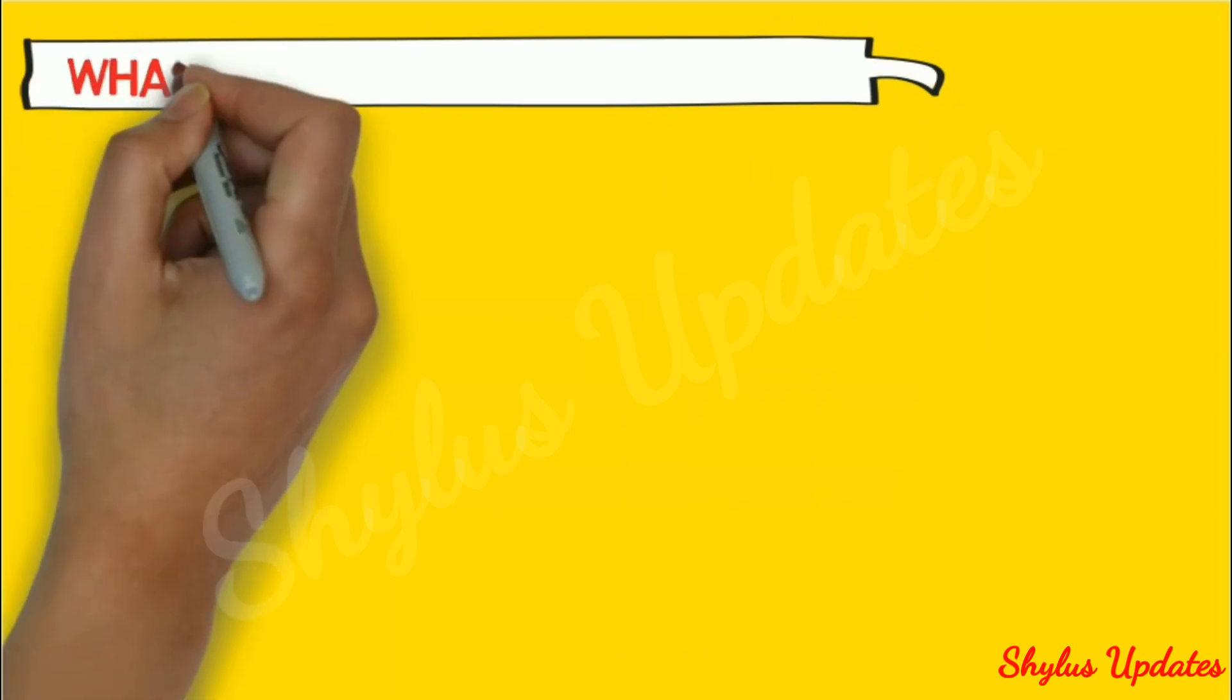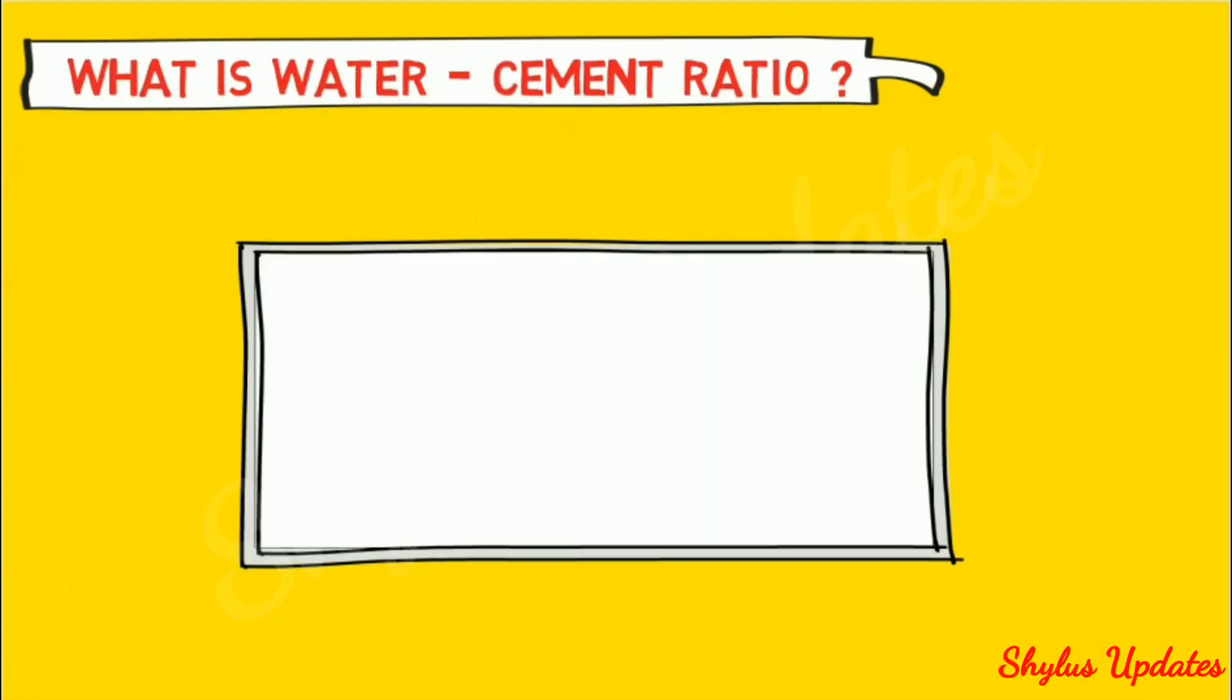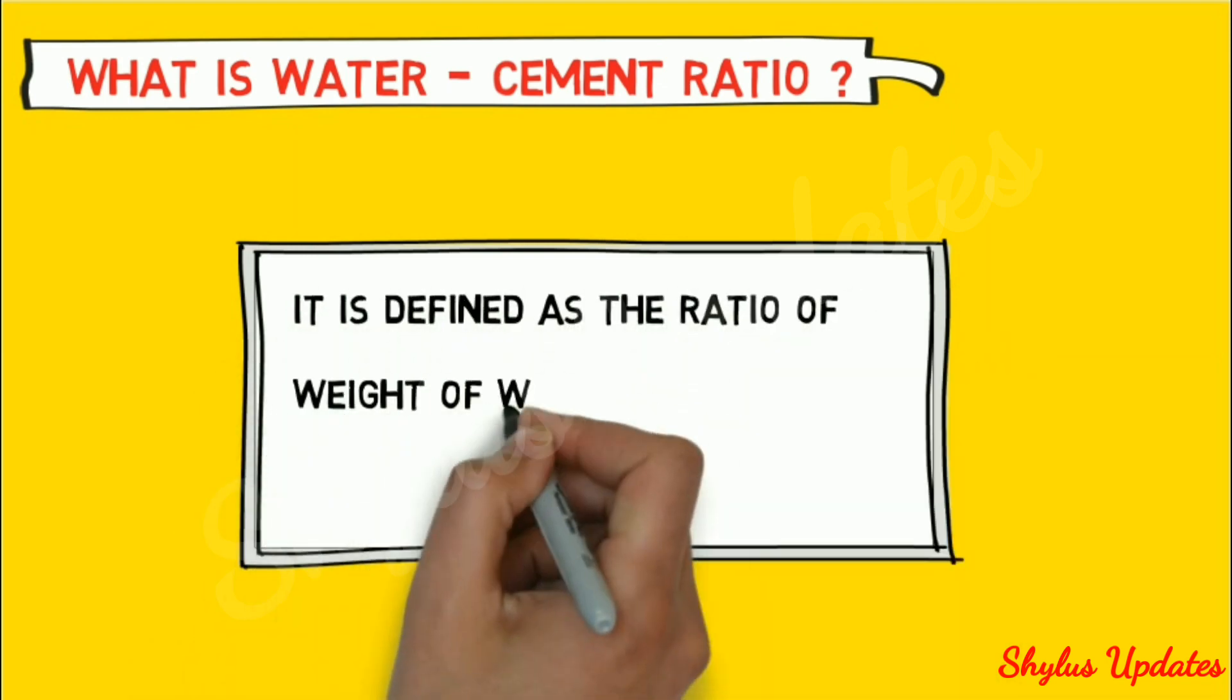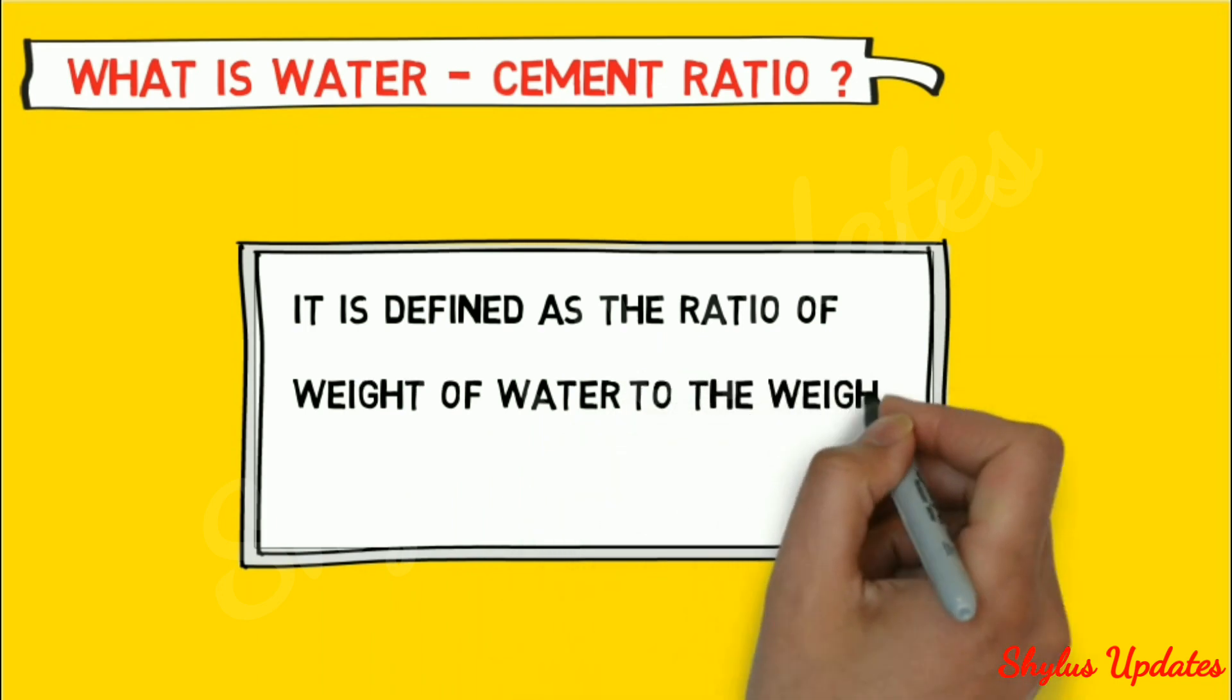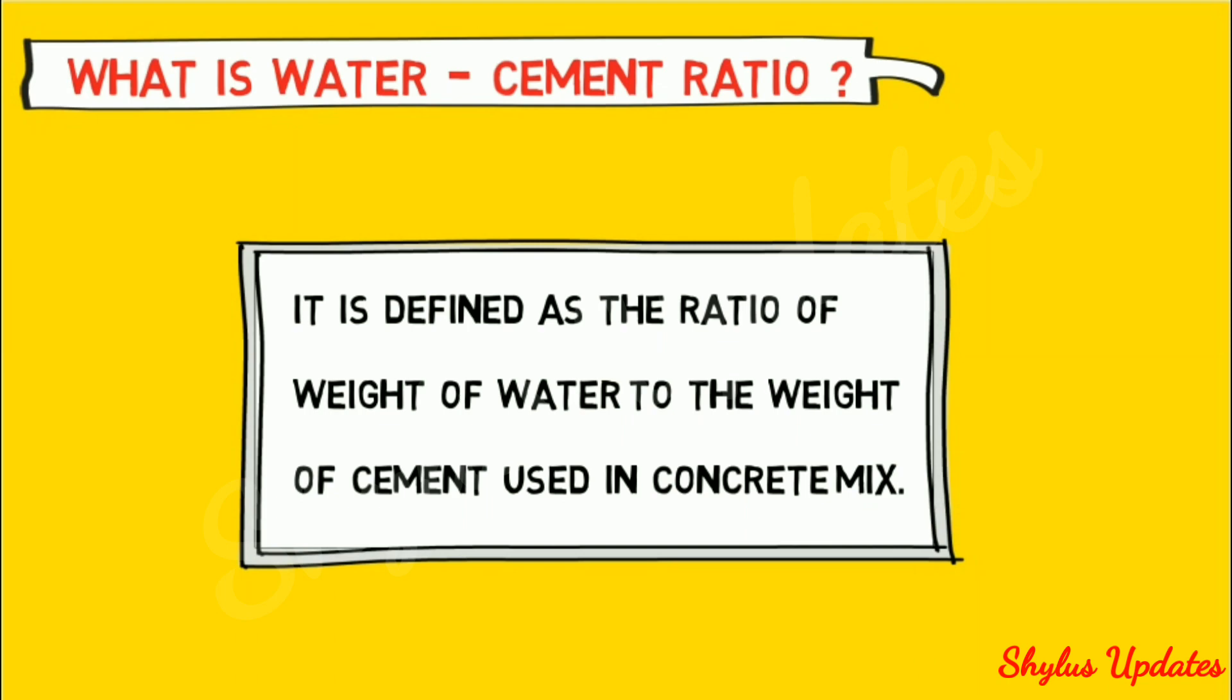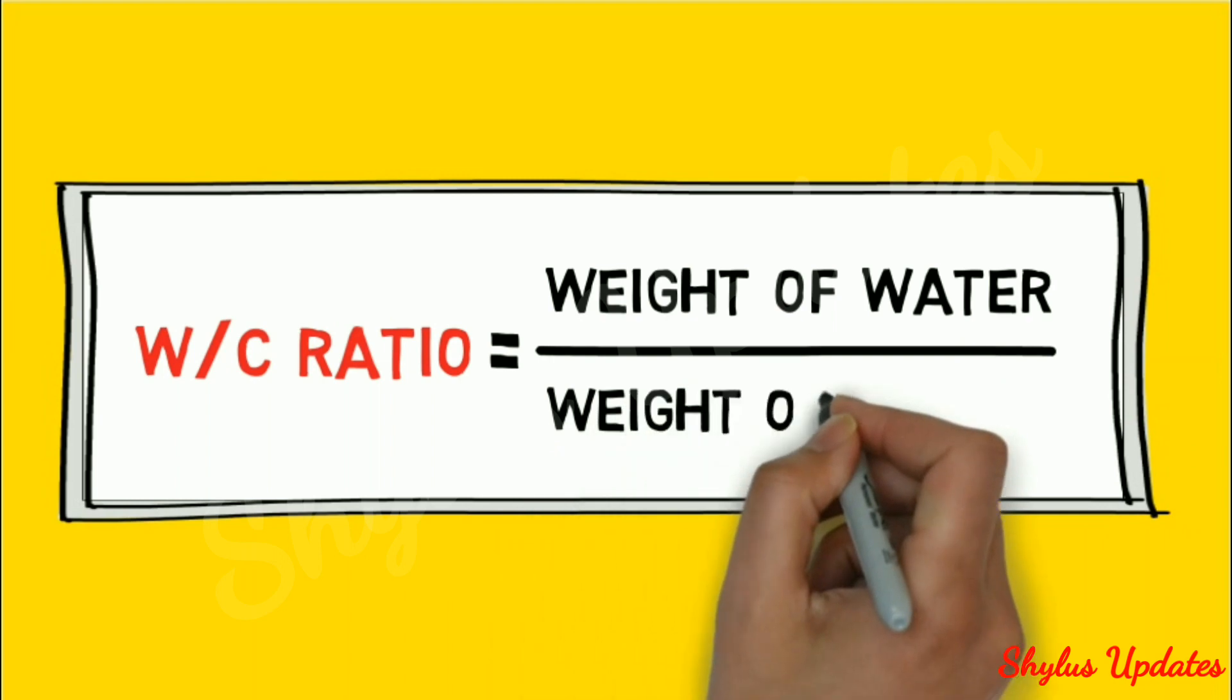What is water-cement ratio? It is defined as the ratio of weight of water to the weight of cement used in concrete mix. That is, W/C ratio equals weight of water divided by weight of cement.